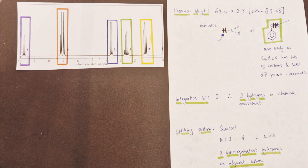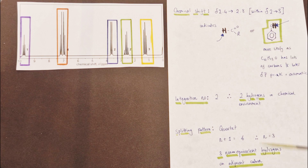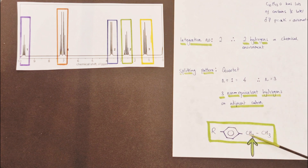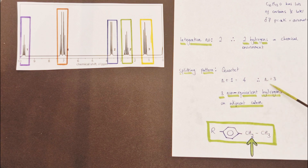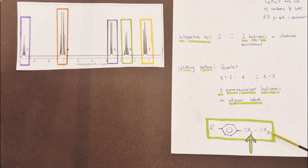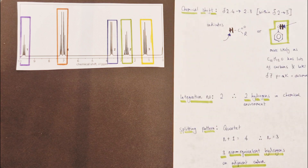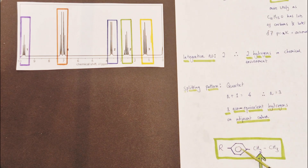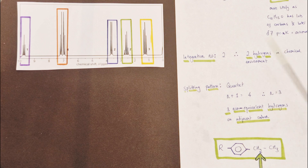Applying the N+1 rule: N+1 equals 4, so N equals 3 — there must be three non-equivalent hydrogens on the adjacent carbon. Bringing this together, we are probably talking about a CH2 group with two hydrogens in our environment, being split by three non-equivalent hydrogens on a CH3 group — the one we already identified. We know it's attached to an aromatic ring because that puts us in the 2.4 to 2.8 ppm region. We'll return to why it's the aromatic ring rather than a carbonyl group, but much of the evidence already points in that direction.